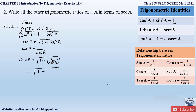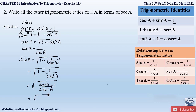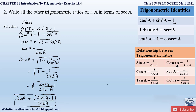Expanding inside the root: 1 minus 1 squared over sec²A, which is 1 minus 1/sec²A. Taking the LCM as sec²A, the numerator becomes sec²A − 1. Separating the square root for numerator and denominator: the numerator stays as √(sec²A − 1), and the denominator √(sec²A) simplifies to sec A. So sine A = √(sec²A − 1) / sec A.